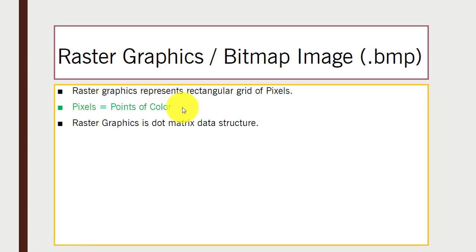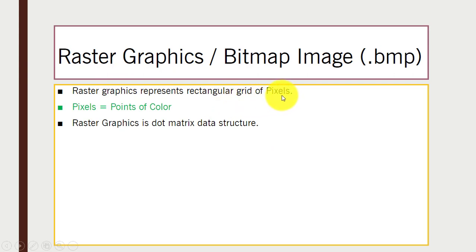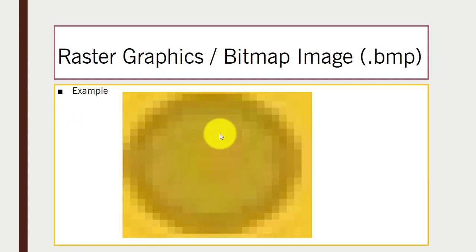Now we have raster graphics. You can see the bitmap image — the file extension for bitmap images is .bmp. Raster graphics represent rectangular grids of pixels, where pixels are the smallest elements of an image, or points of color. Raster graphics use a dot matrix data structure. We will discuss vector graphics and raster graphics in more detail in an upcoming video on raster scan display and vector scan display.